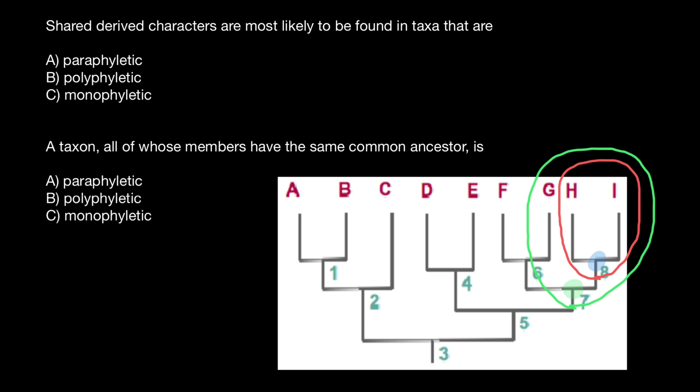And what would be example of the polyphyletic group? Imagine that we have species C, and let's say this is fly. And another species is going to be species F, and taxon F is a bird, and we group them together only because they both can fly, but they are unrelated.